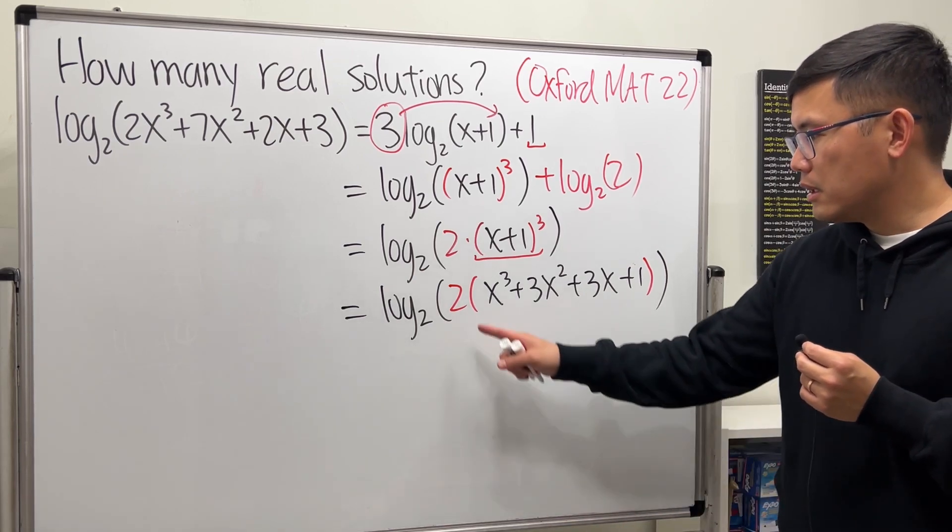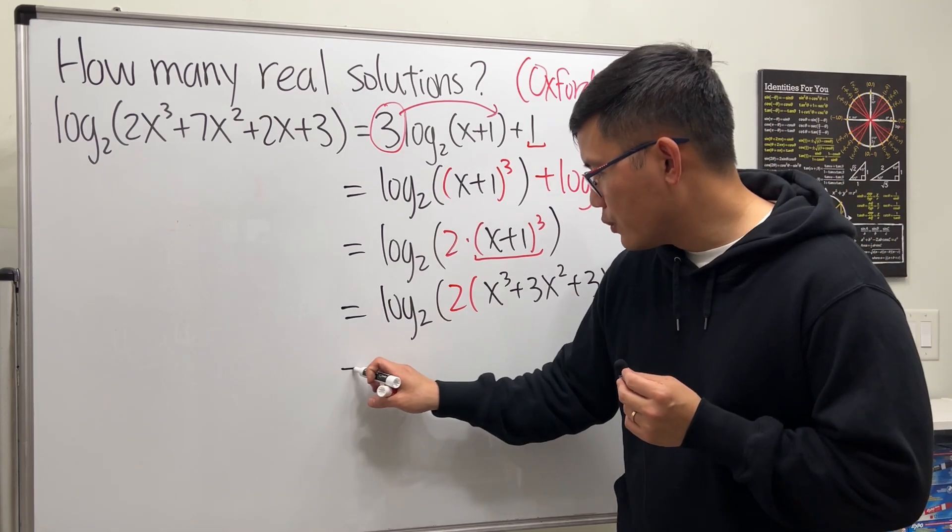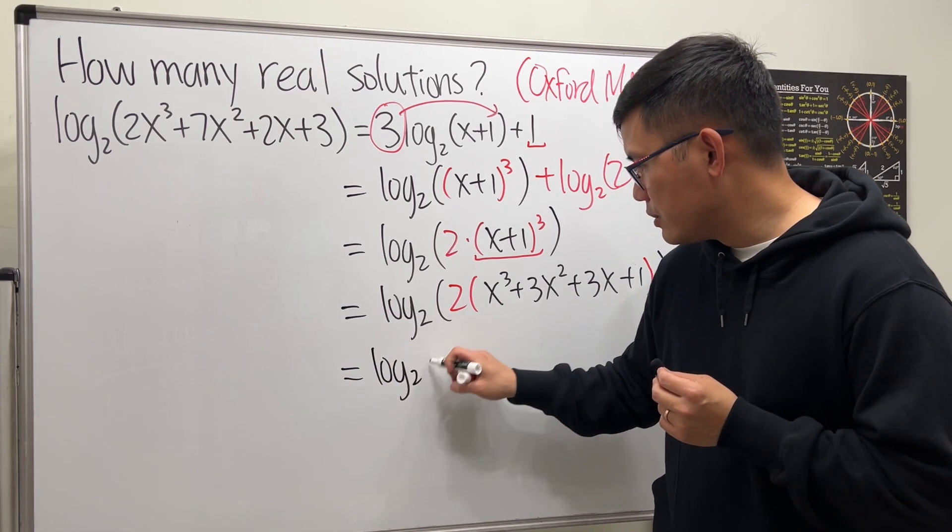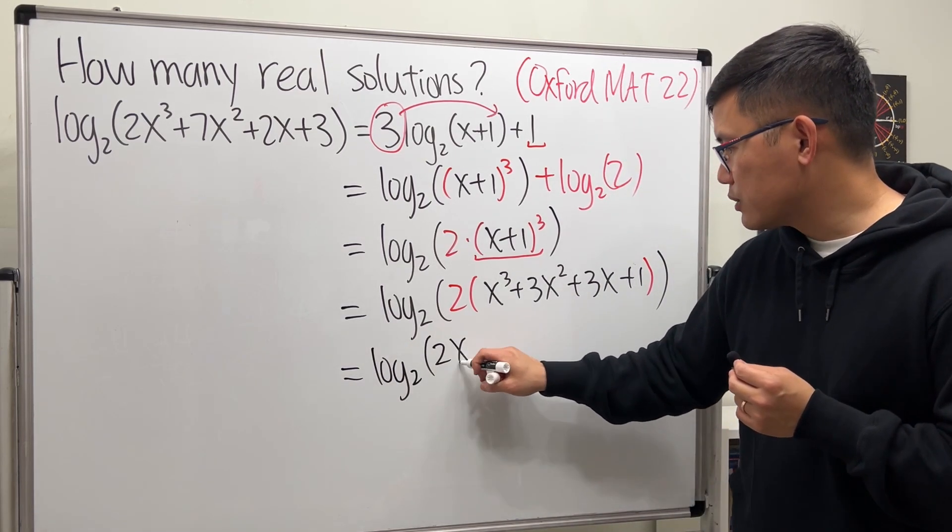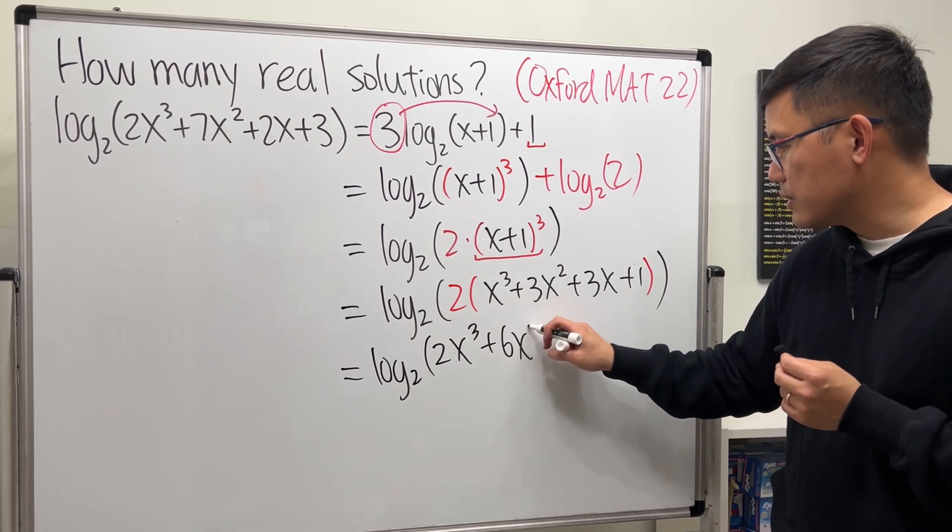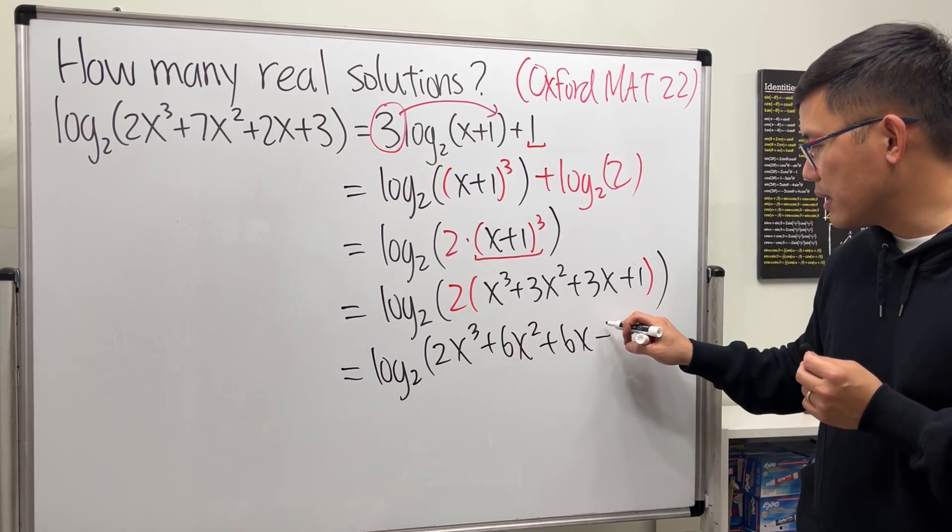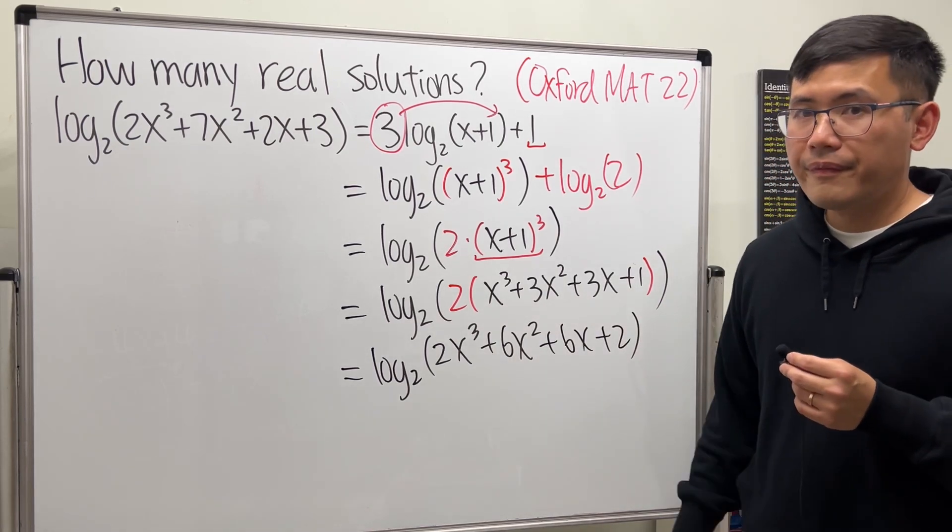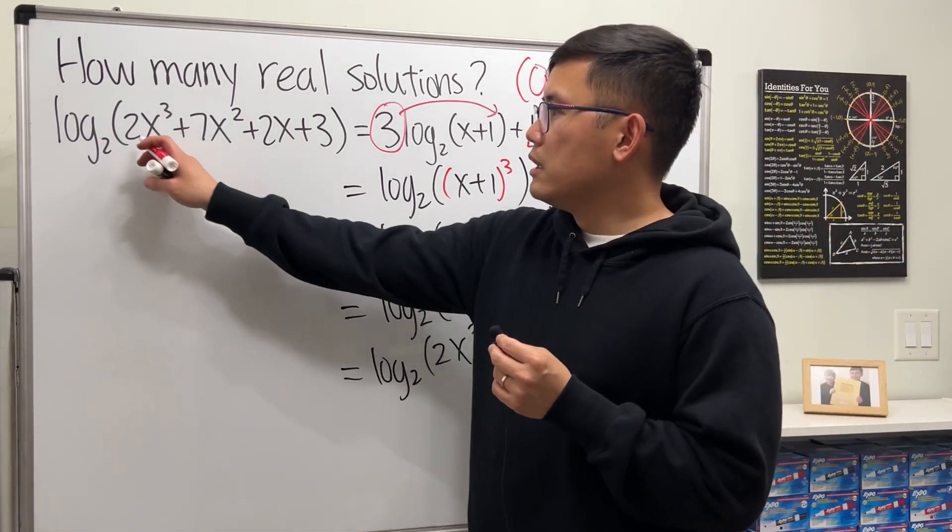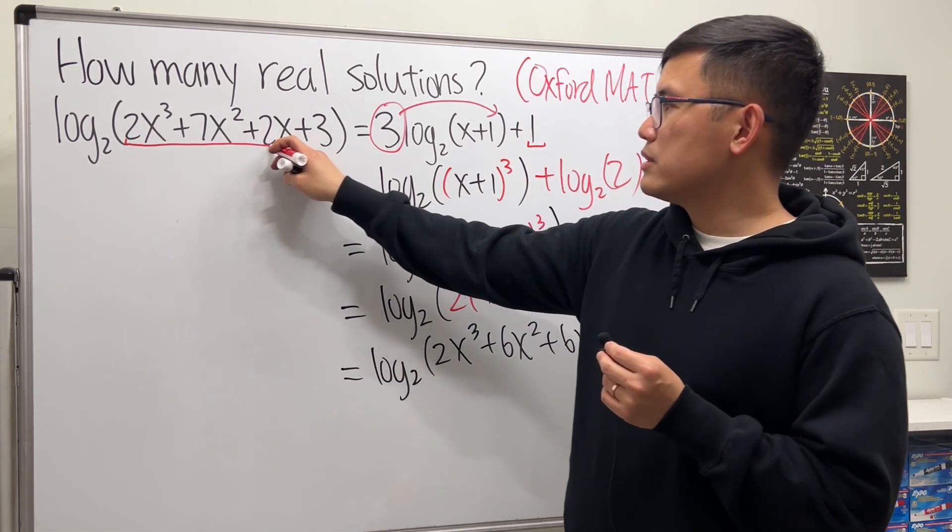Let's continue from here. Distribute the 2, so we get log base 2 of 2x³ + 6x² + 6x + 2.